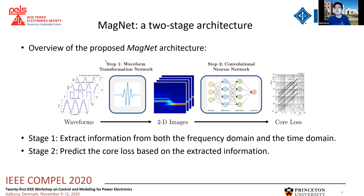In this work, we'd like to present a two-stage architecture as an example. Here is the overview of this architecture, where the first stage is a waveform transformation network, which can extract information in both the frequency domain and the time domain, and the second stage is a neural network which is trained to predict the core loss based on the extracted information. Now let's have a detailed look at each stage.